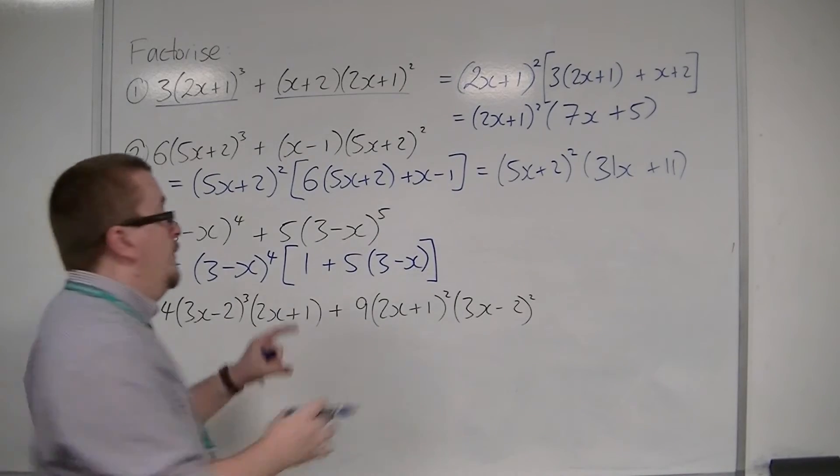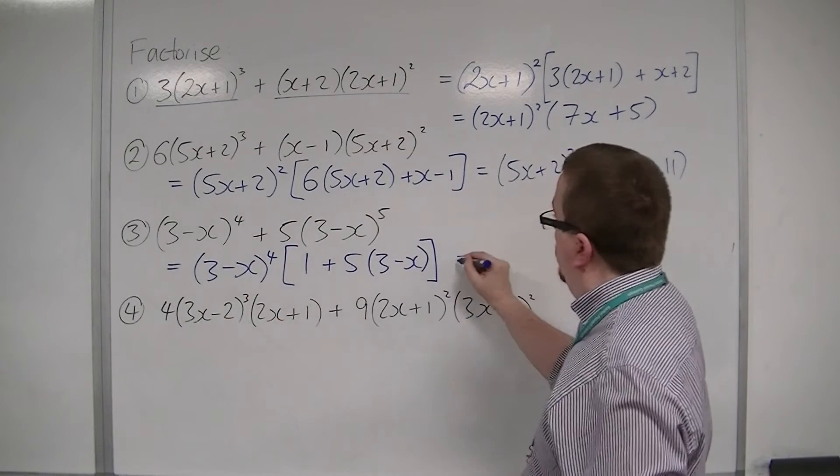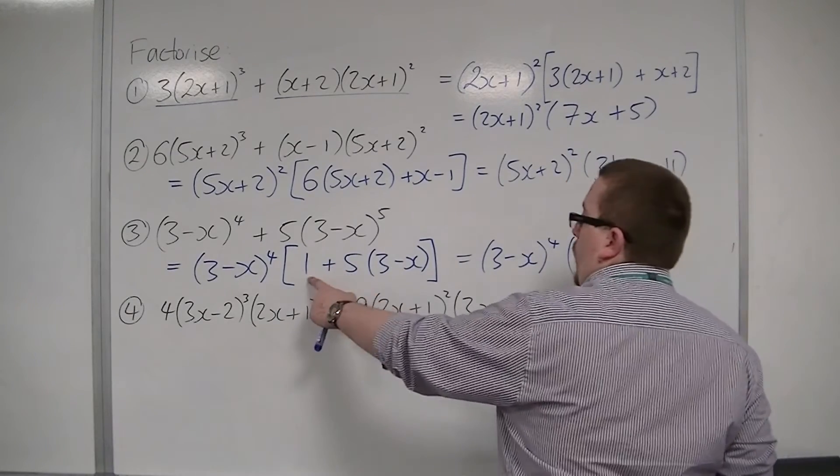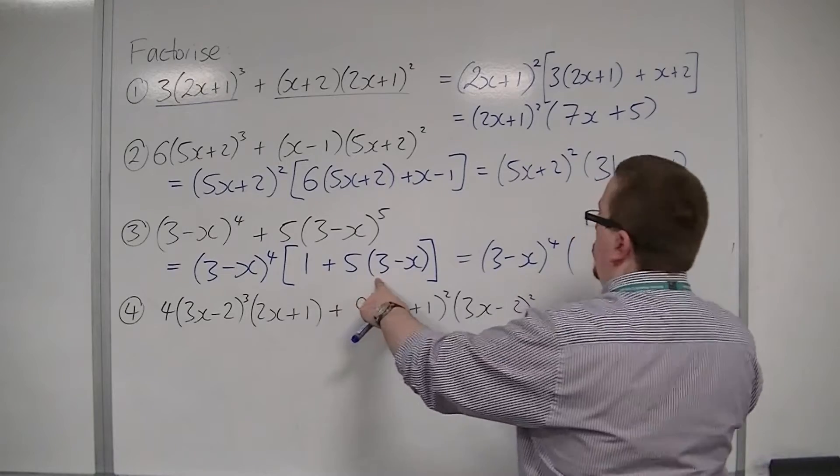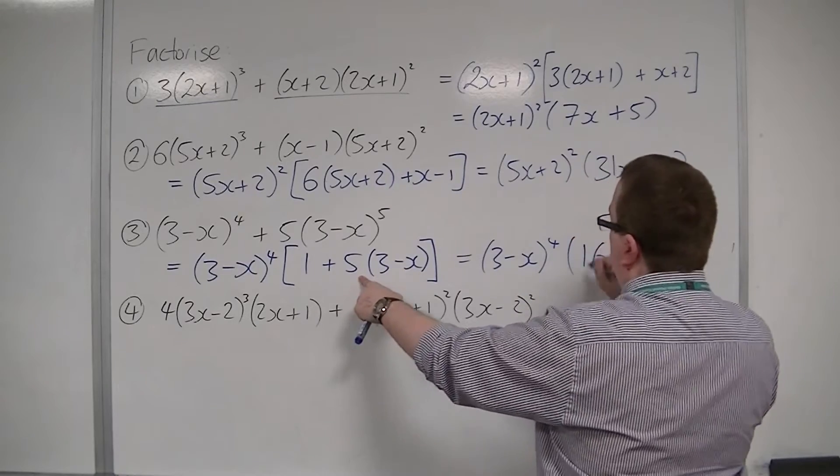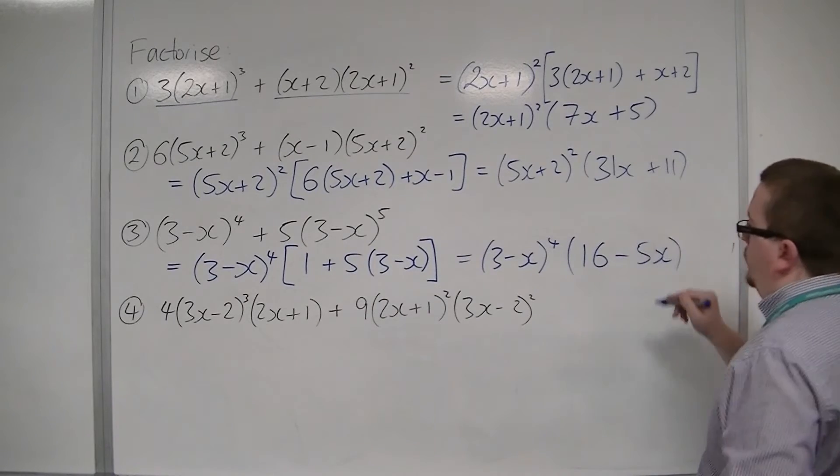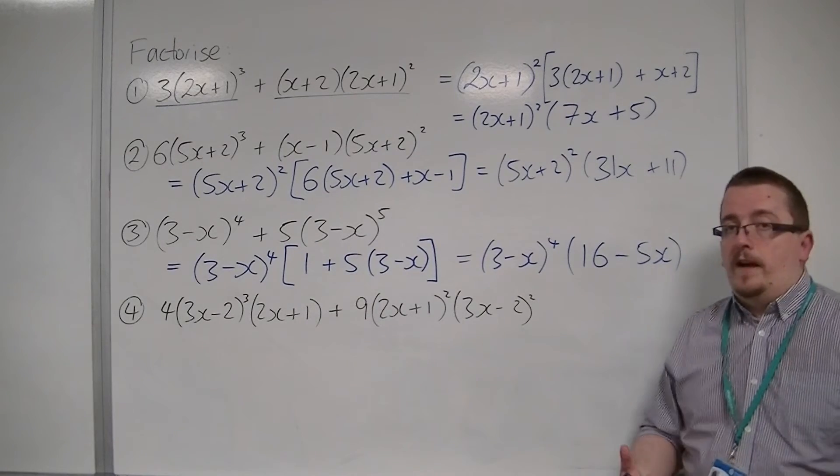Now I just want to simplify what's in that square bracket. We've got 3 minus x to the power of 4. Then I've got 1 plus 5 lots of 3, so 1 plus 15 is 16. And I've got 5 lots of minus x, so minus 5x. And that's the fully factorised form.